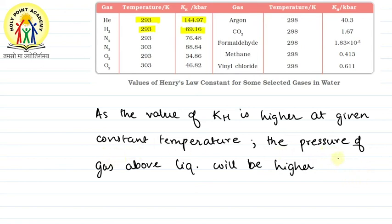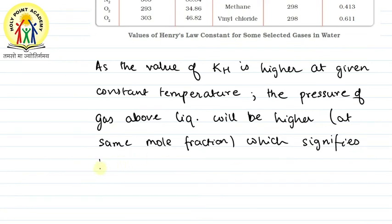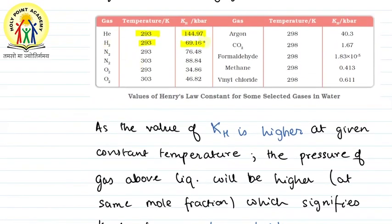Higher pressure of gas at the same mole fraction signifies that the gas is less soluble. So as the KH value is higher, pressure is more, meaning more gas stays in the gaseous phase rather than dissolving — so solubility decreases. Since H₂ has a higher KH value, it is less soluble compared to others.